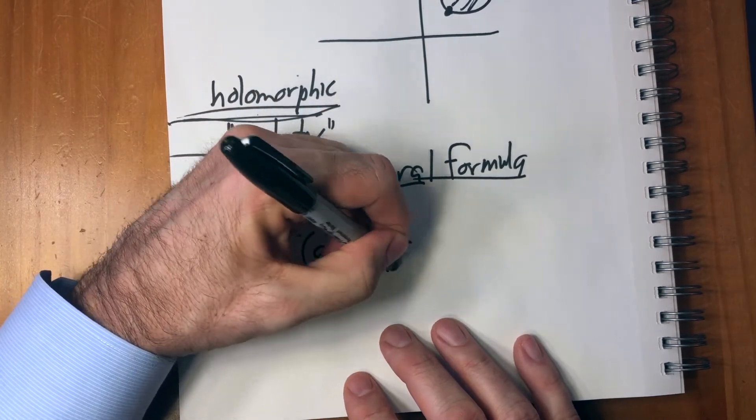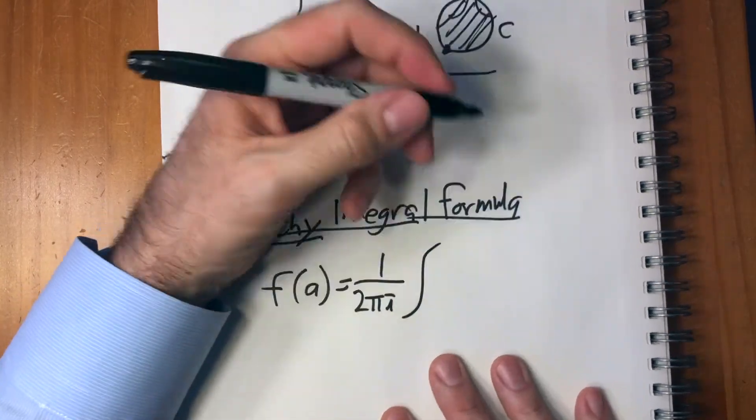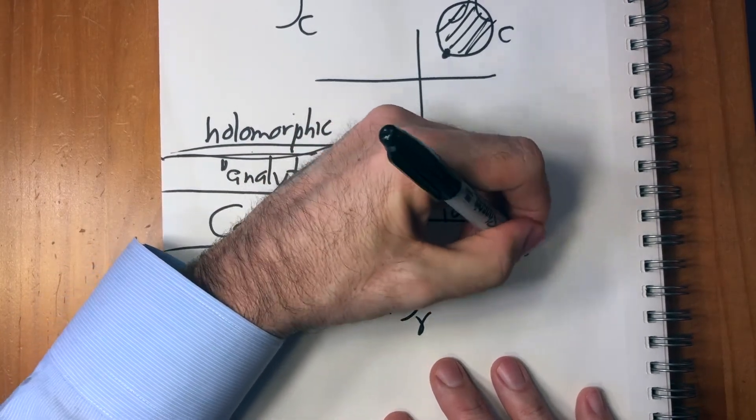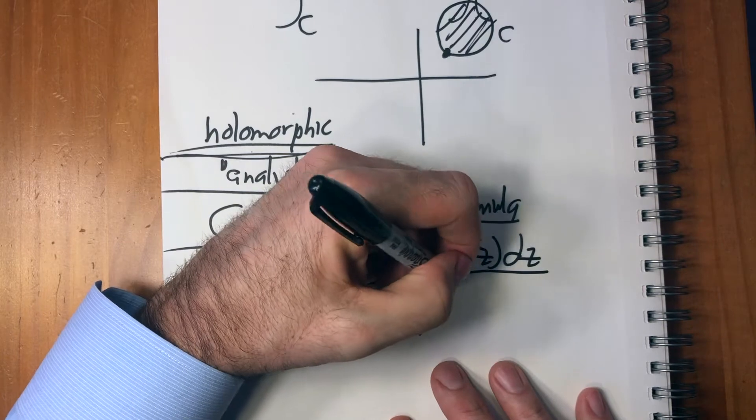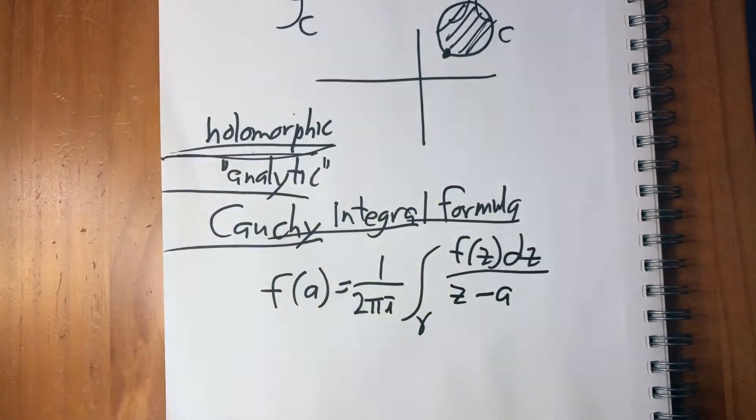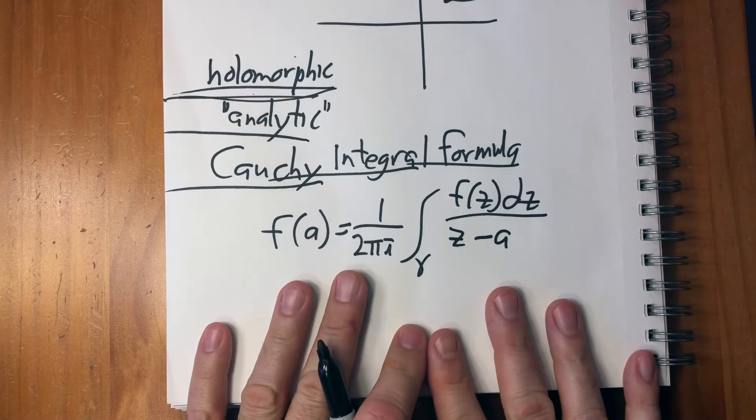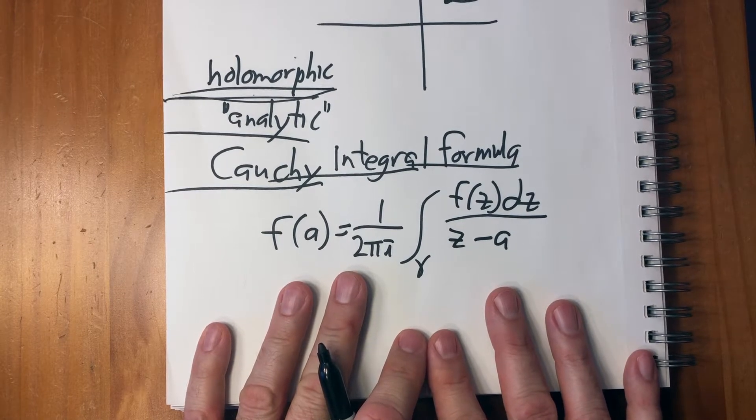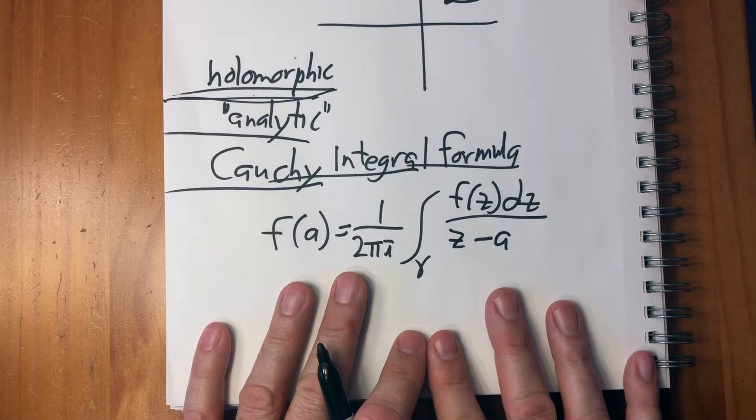So one over two pi i integral over a curve of f of z dz over z minus a. This looks horrible. And if your brain is ever going to shut off, it's going to shut off right here because this is a disaster.